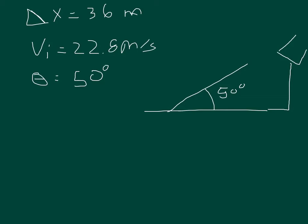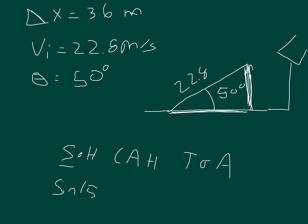So what I need to do is break up this initial velocity into a horizontal component and a vertical component. I can do that with trig. You remember SOH-CAH-TOA. The sine of the angle is opposite over hypotenuse, and that will give me my vertical velocity. So the sine of 50 is equal to the opposite, which is what we don't know, over 22.8.